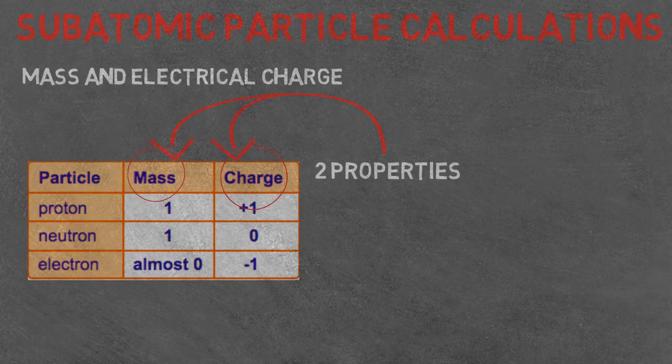An easy way I find to remember the charges is pro for proton is positive, pro for positive, nu for neutral, neutron has nu, and electron is the only one left, so it is negative.